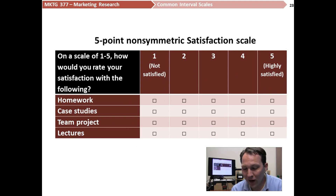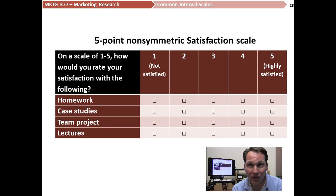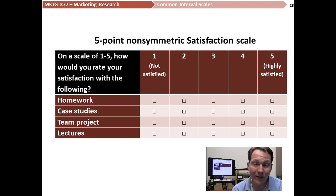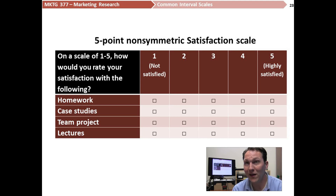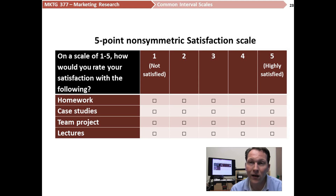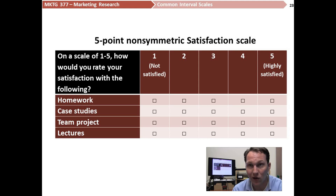We can also have a five-point non-symmetric satisfaction scale, which I use as well. On a scale of one to five, how would you rate your satisfaction with the following — attributes like homework, case studies, team project, and lectures. A one means not satisfied — not dissatisfied, just not satisfied — and a five means highly satisfied. We leave some interpretation to the respondent but don't go into negative territory; we're simply asking whether there is presence of satisfaction or no satisfaction at all.